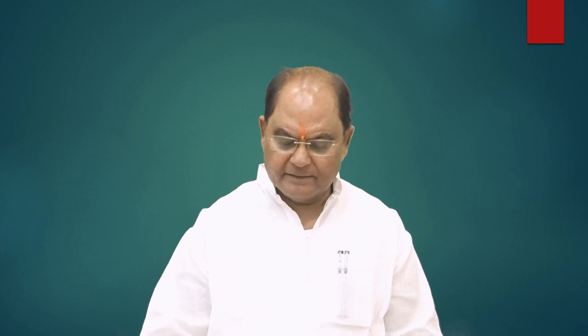That remains the case for a longer period of time, but time span is very important — whether it is a short run or a long run. If the production function is given to us as Q = F(K, L), where K stands for capital and L stands for labor, that means quantity of production is a function of capital and labor. In the short run, capital does not vary; capital remains constant, but labor is increased or decreased. So labor becomes the variable factor. In the long run, capital also becomes variable, but in the short run, capital is not varied.